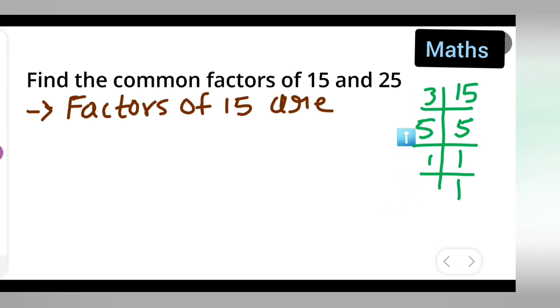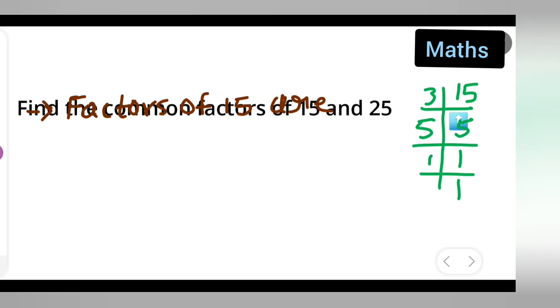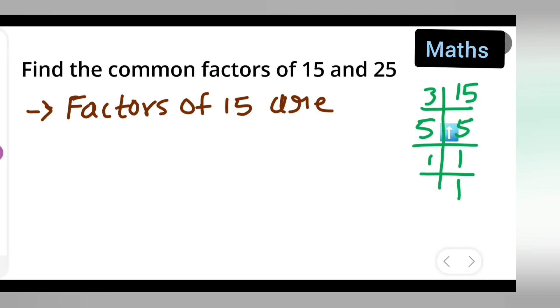What are they? 1, 3, and then 5. Okay. So you can write down the factors of 15: 1, 3, 5, and 15 itself. Right. Or you can directly write down 1 and 15.